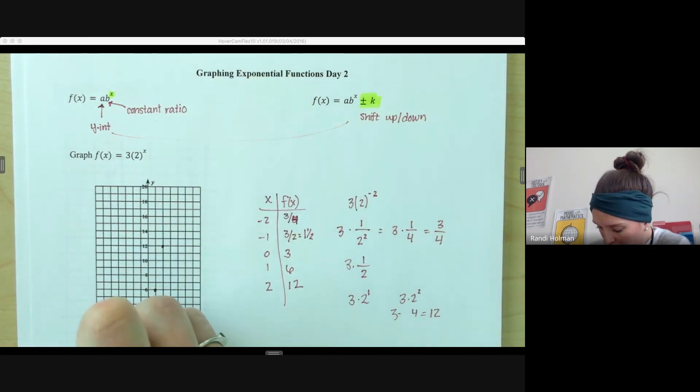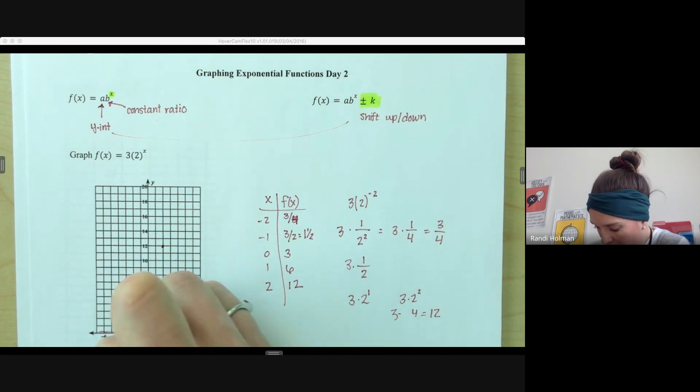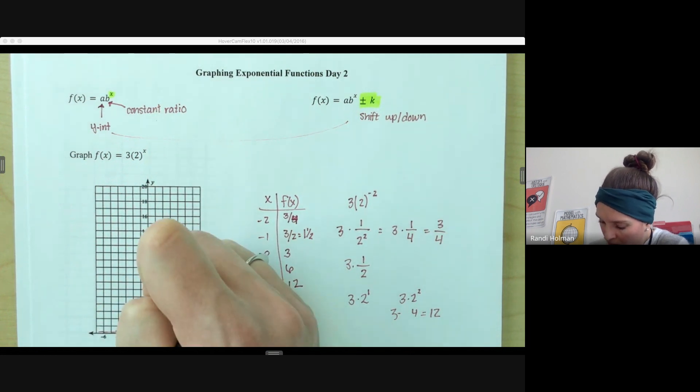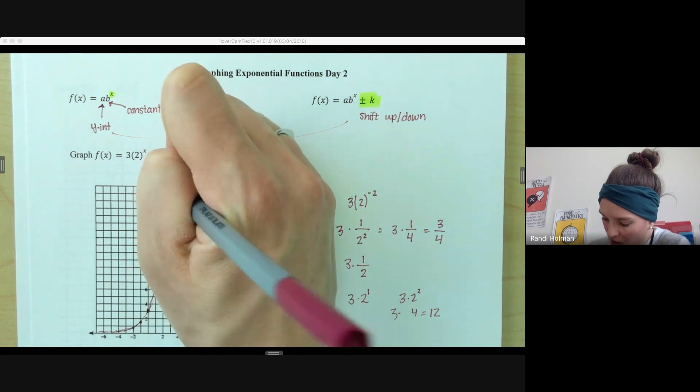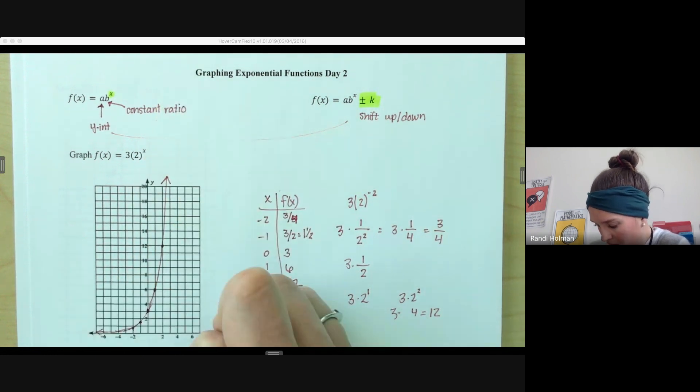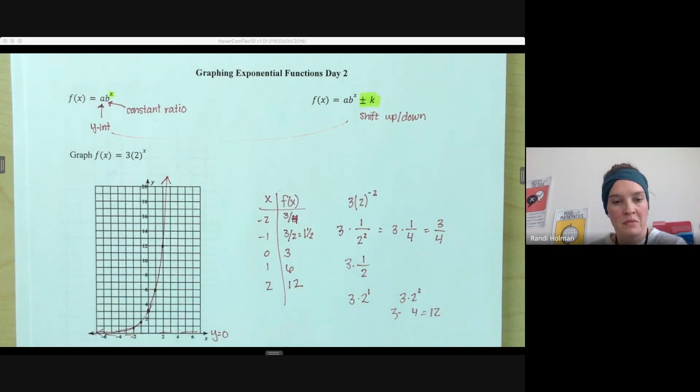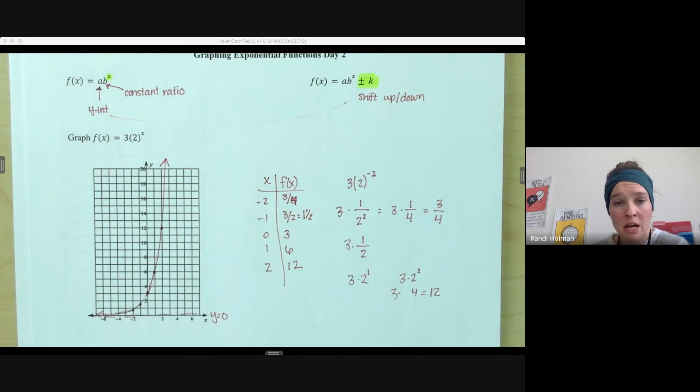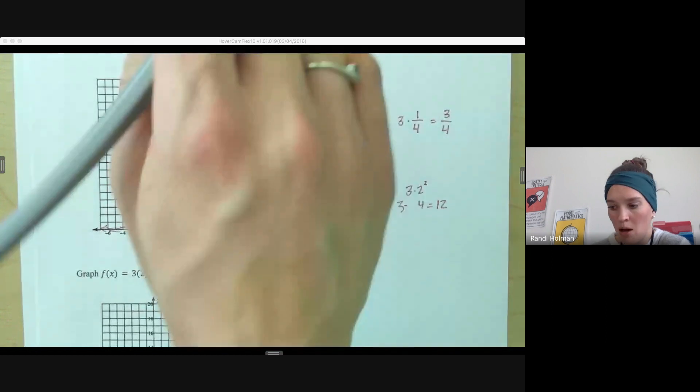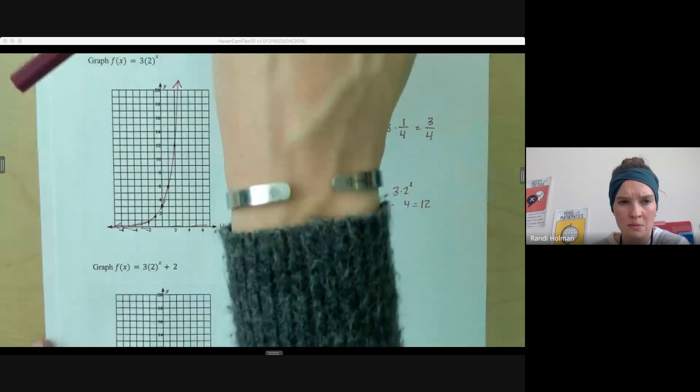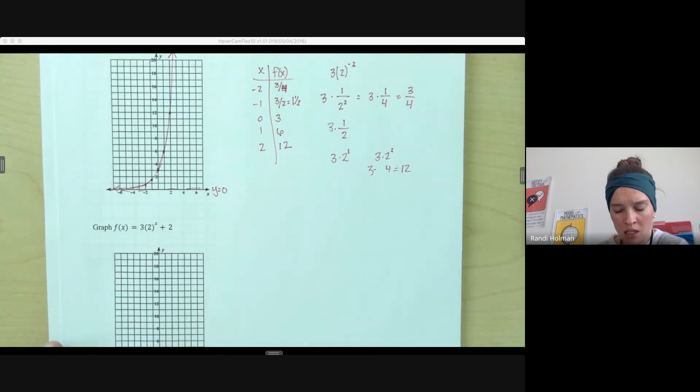So here, we still have that same asymptote at y equals 0. So we're going to approach 0 but not cross it, making a nice little curve there. Here's our asymptote at y equals 0. And there is our graph. Now we're going to utilize this graph to help us graph this next one. So let's zoom around a little bit so you can see both of them at the same time.